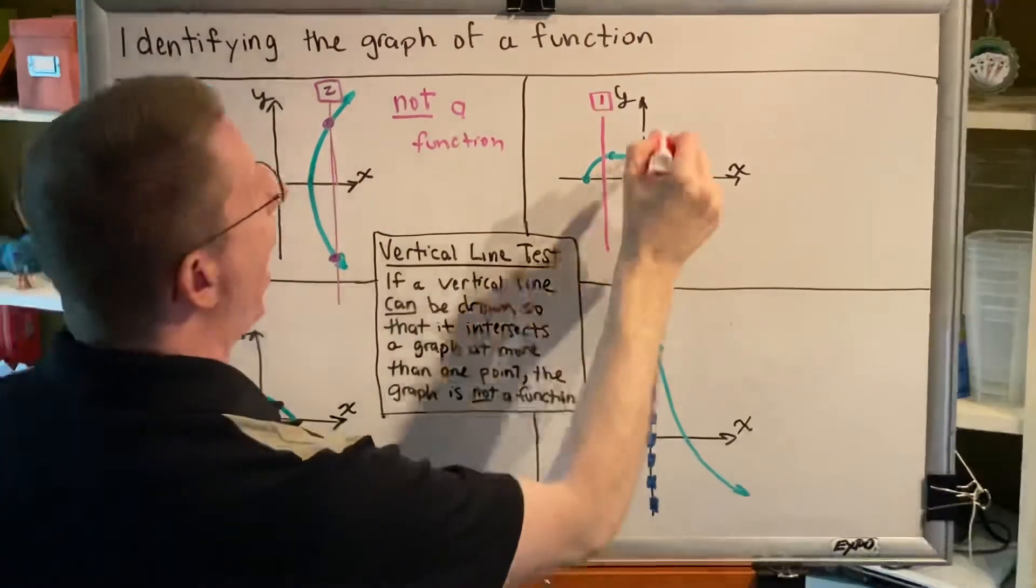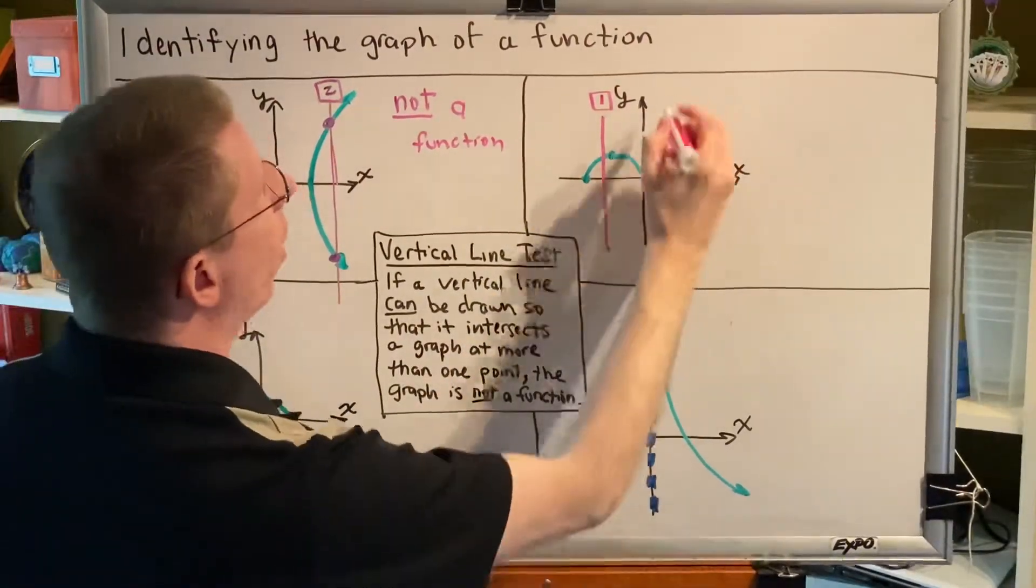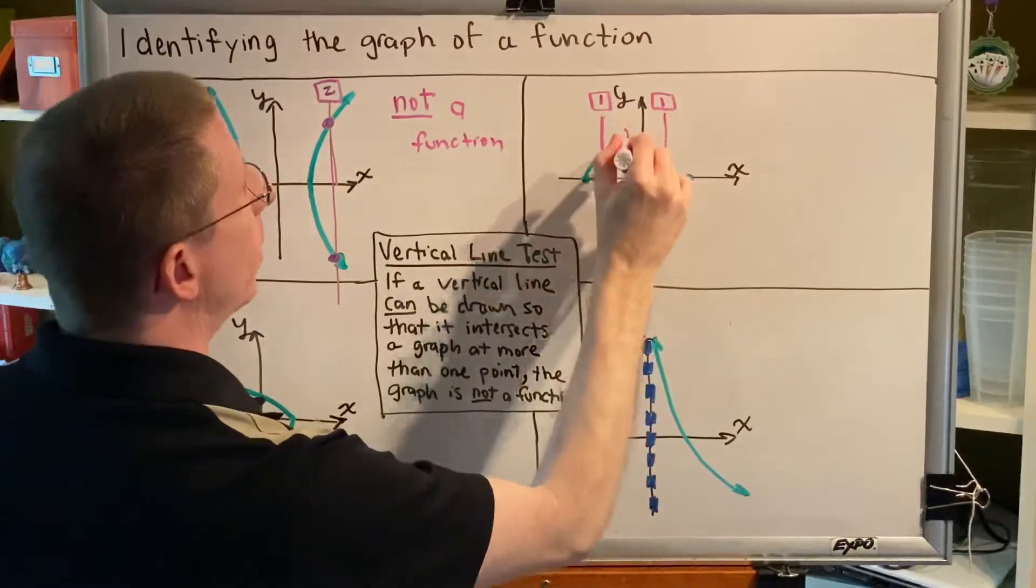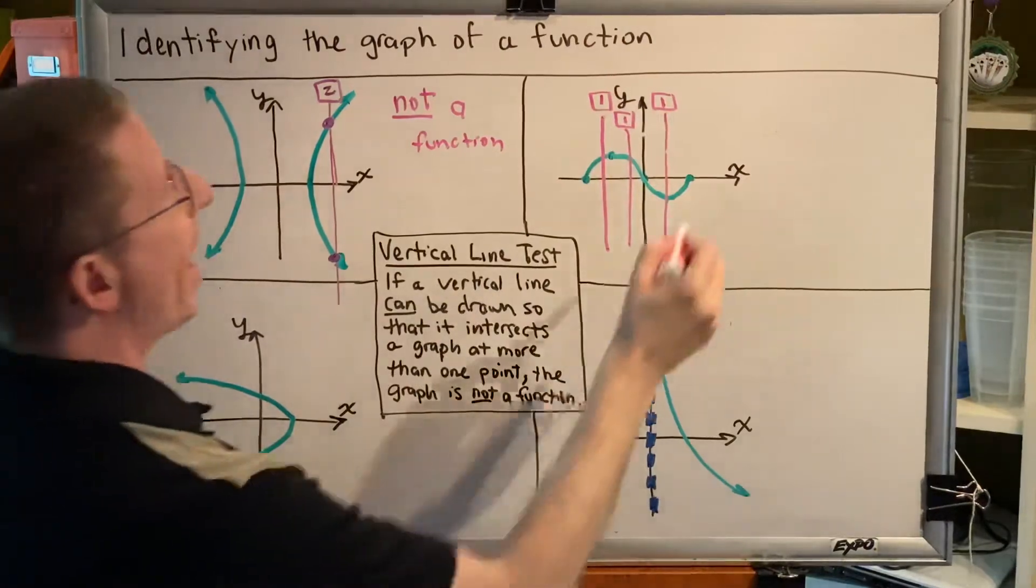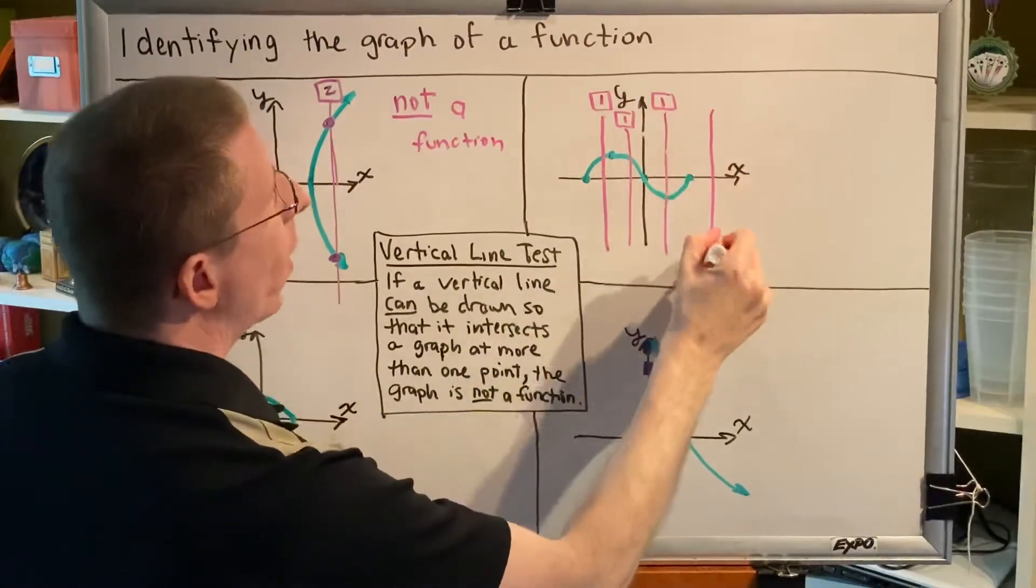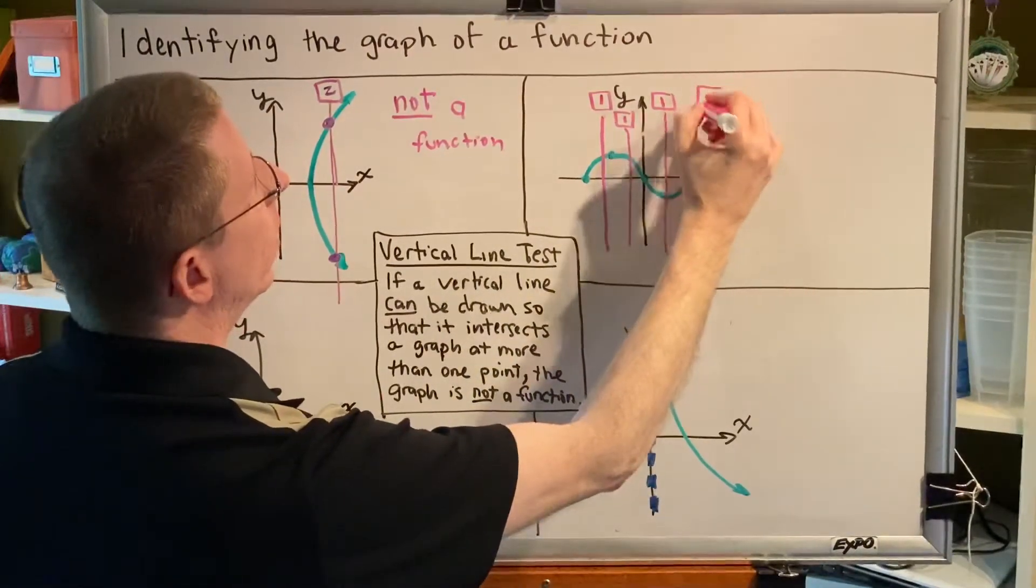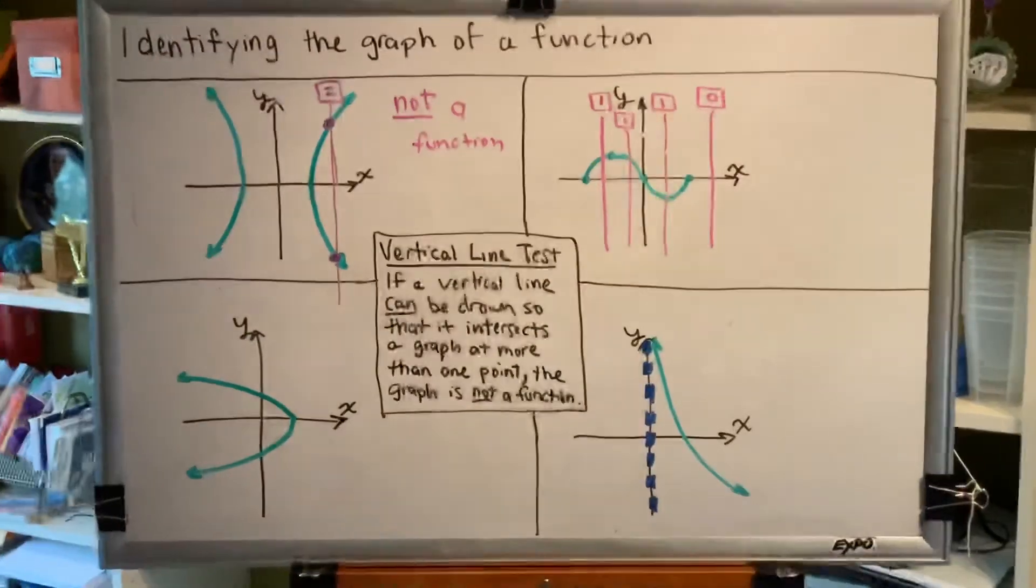And no matter how many vertical lines I draw, each one is only going to hit the green curve at exactly one point. In fact, if I draw my vertical line way over here, it will hit it at exactly zero points.